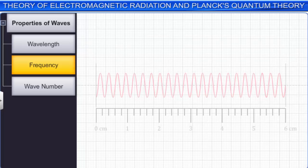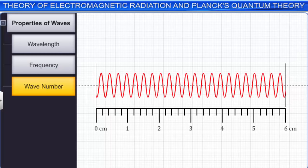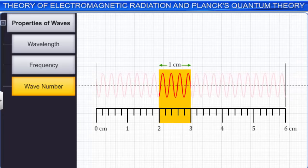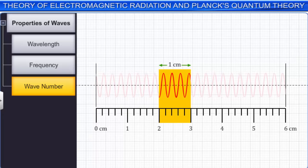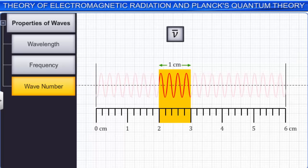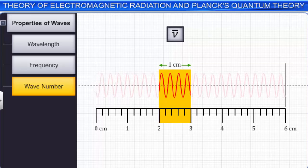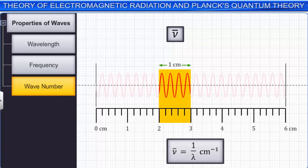The last characteristic of a wave is the wave number, which is defined as the number of wavelengths per unit length. It is denoted by the symbol nu bar and given by the equation: nu bar = 1/lambda per centimeter.